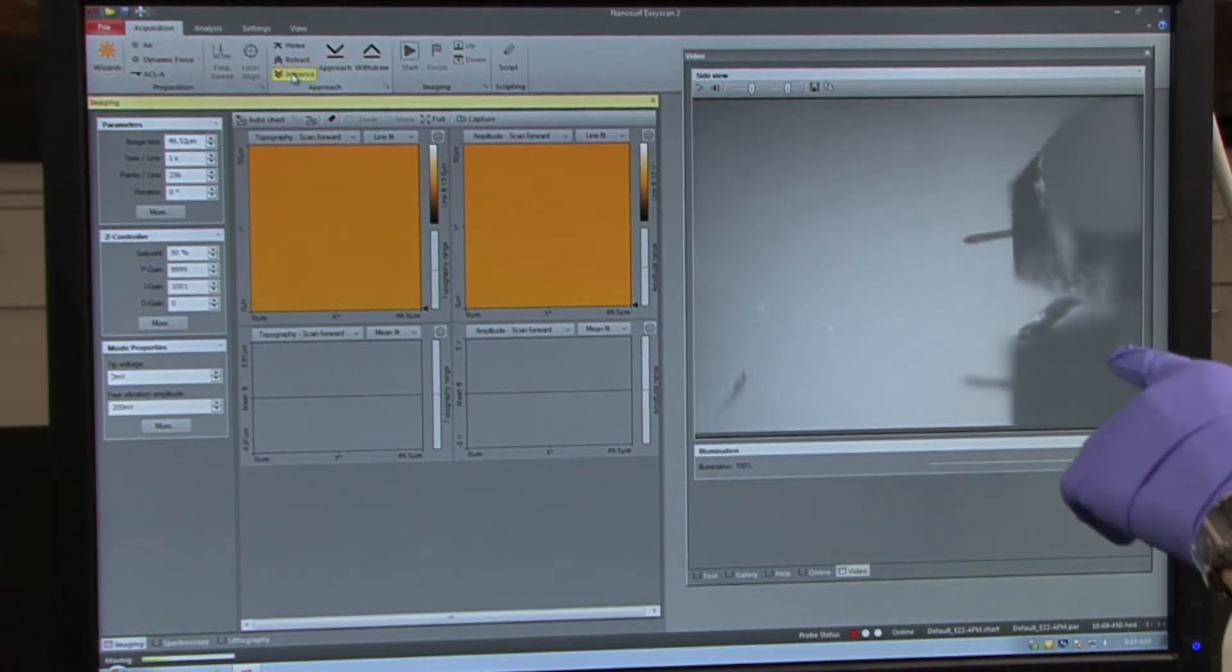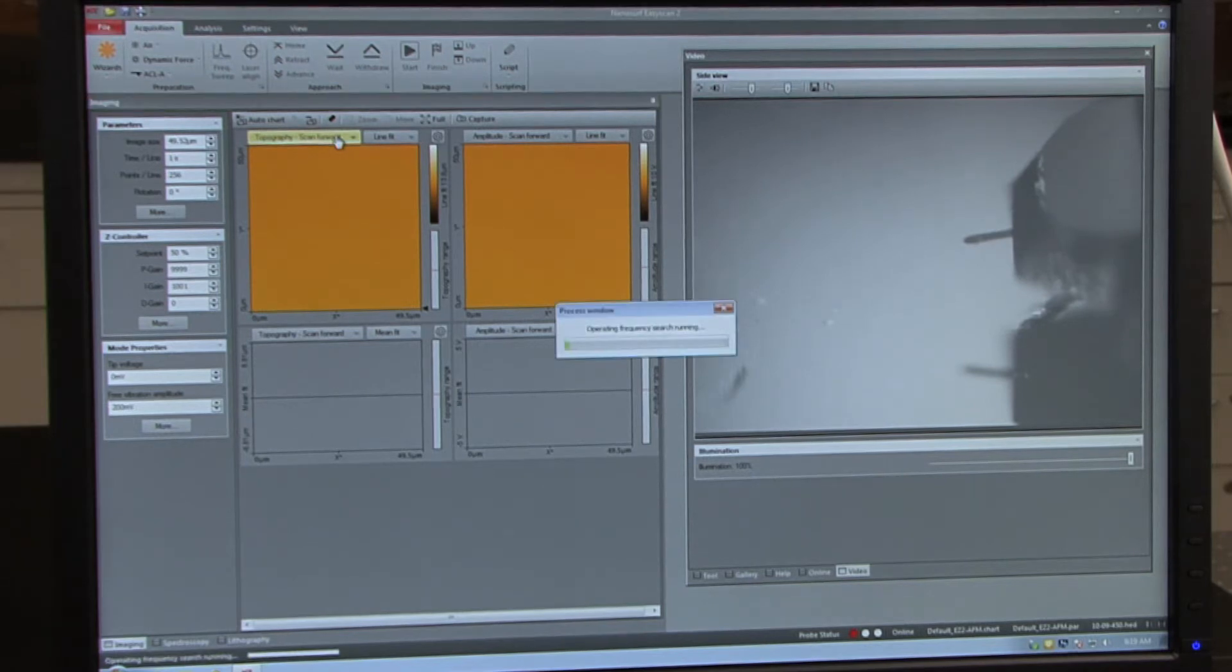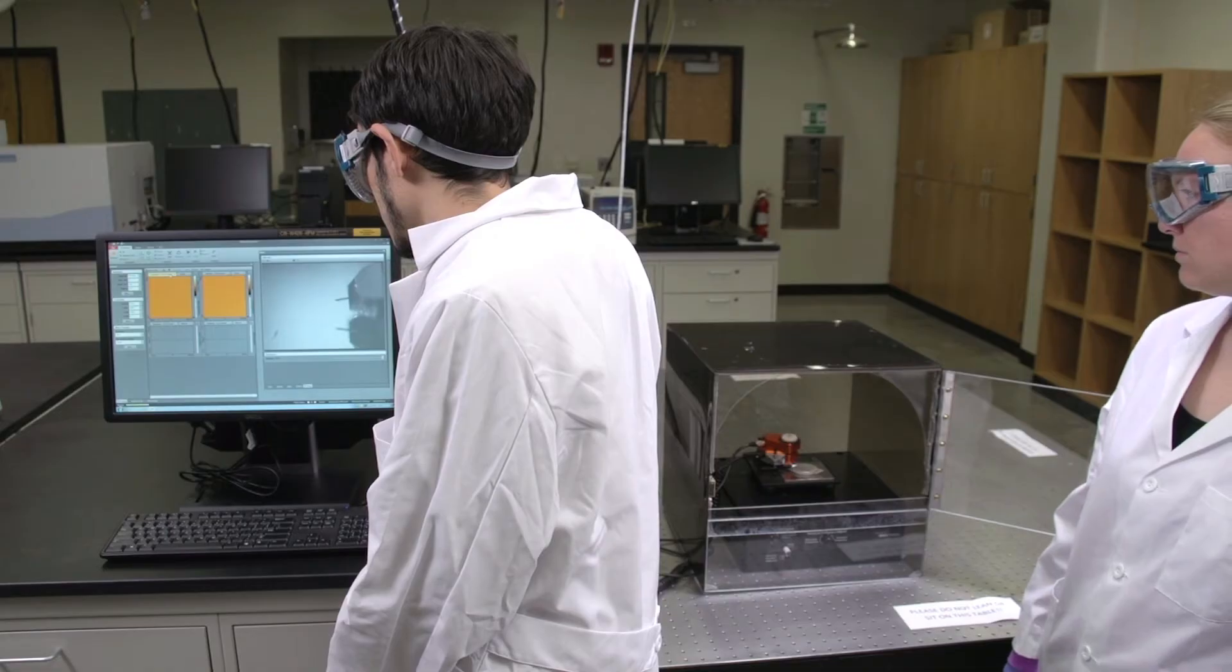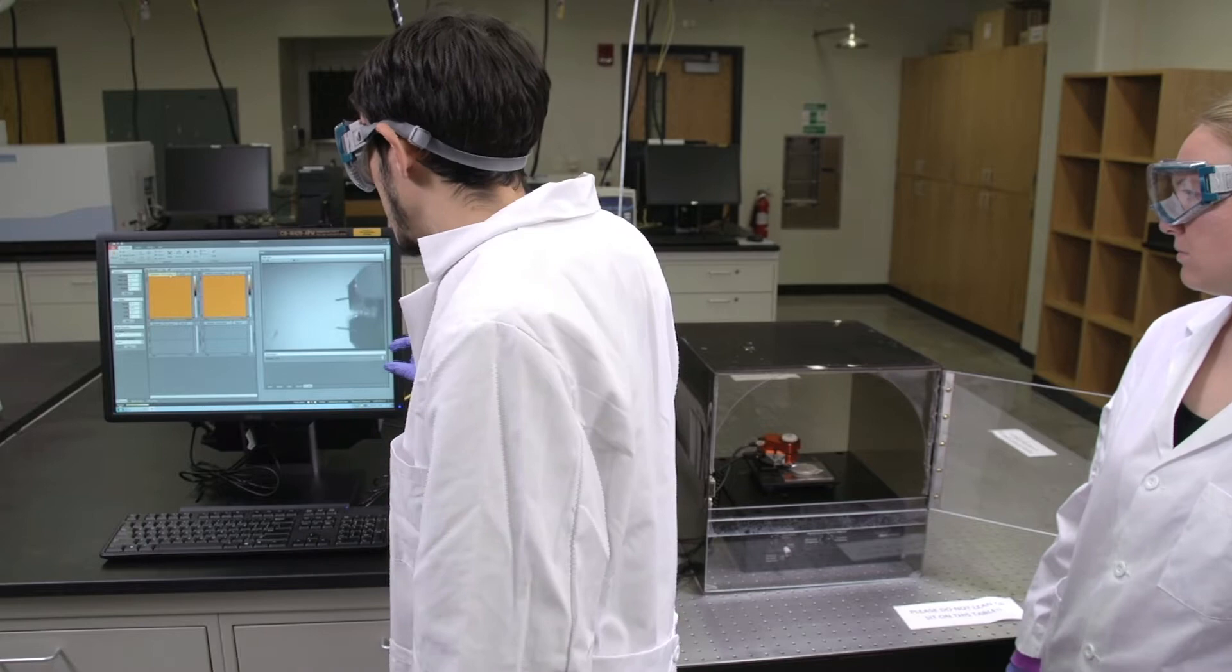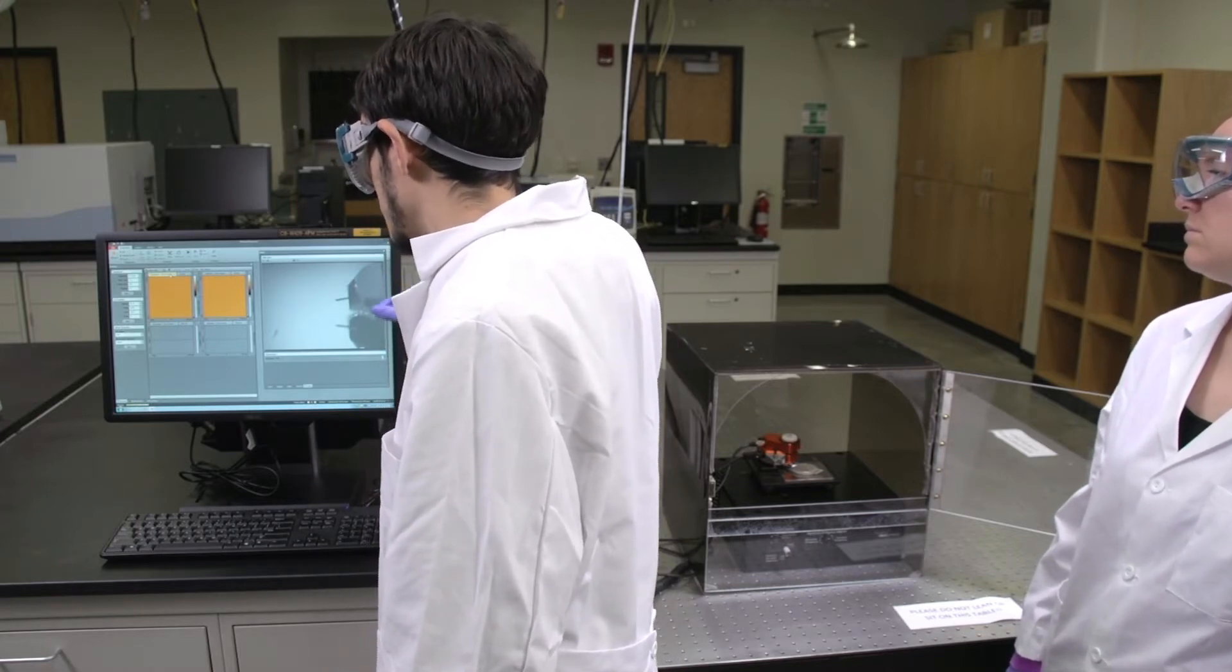Once the shadows are roughly touching, click approach instead of advance. You'll only need to click this once. You'll notice that an automated procedure has started, which brings the tip as close as possible to the surface.